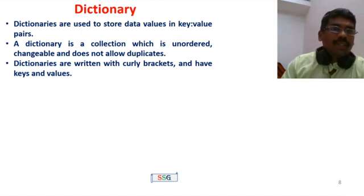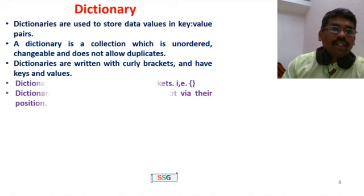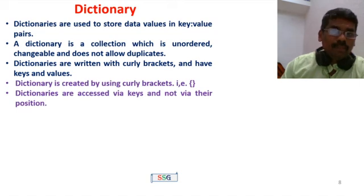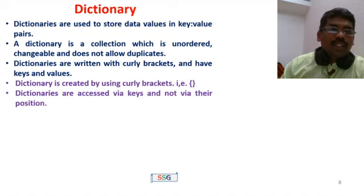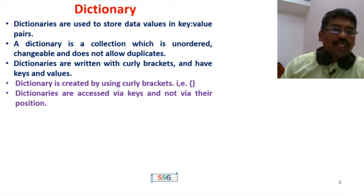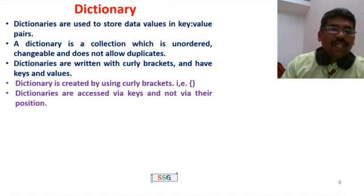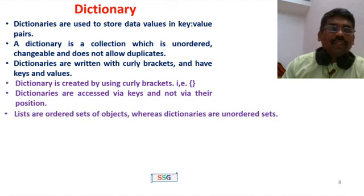Dictionaries are unordered and changeable, and do not allow duplicate keys. Dictionaries are written with curly brackets and have key-value pairs inside. Dictionary values are accessed via keys, not via their index position.